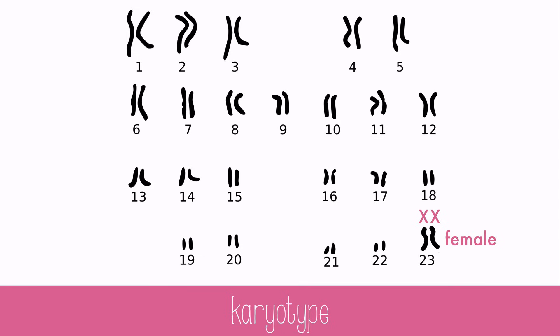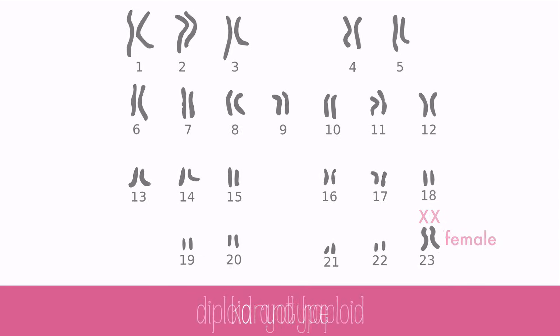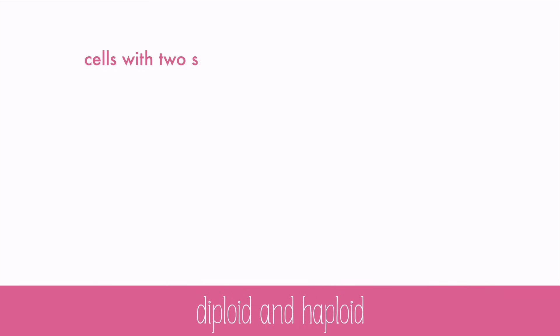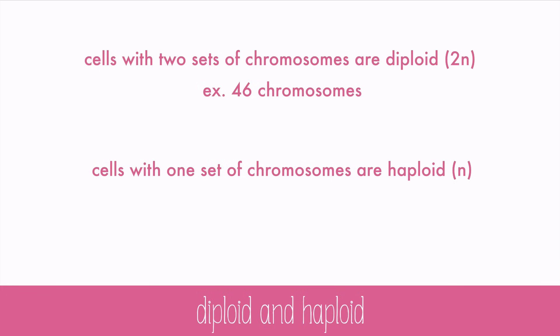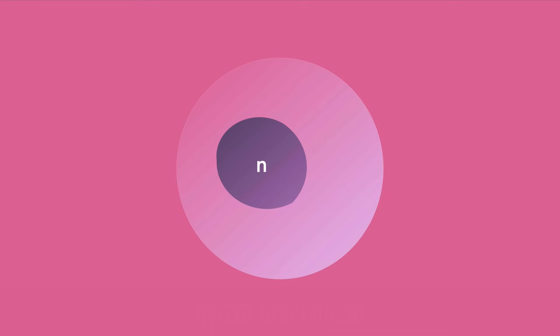The full 46 chromosomes in humans are the diploid number. Any cells with two sets of chromosomes are diploid, but any cells with only one set of chromosomes are haploid. In humans, sperm and egg cells are the only haploid cells, and they have just 23 chromosomes. The reason for that is that during fertilization, the sperm and egg fuse and make a new human who has a diploid set of chromosomes.